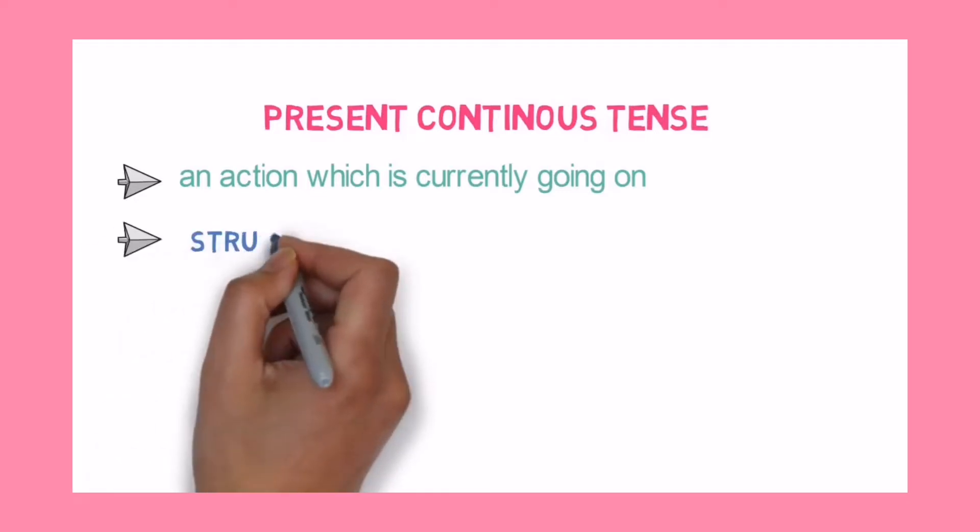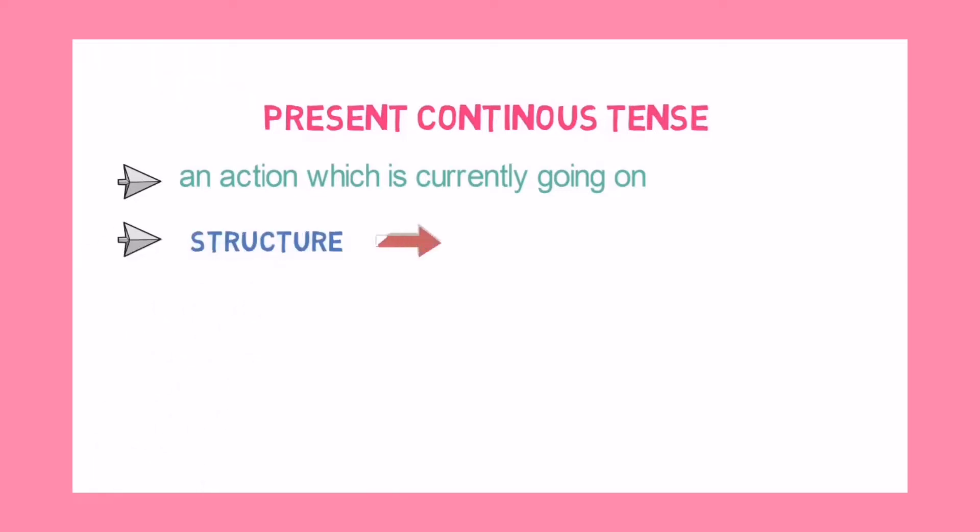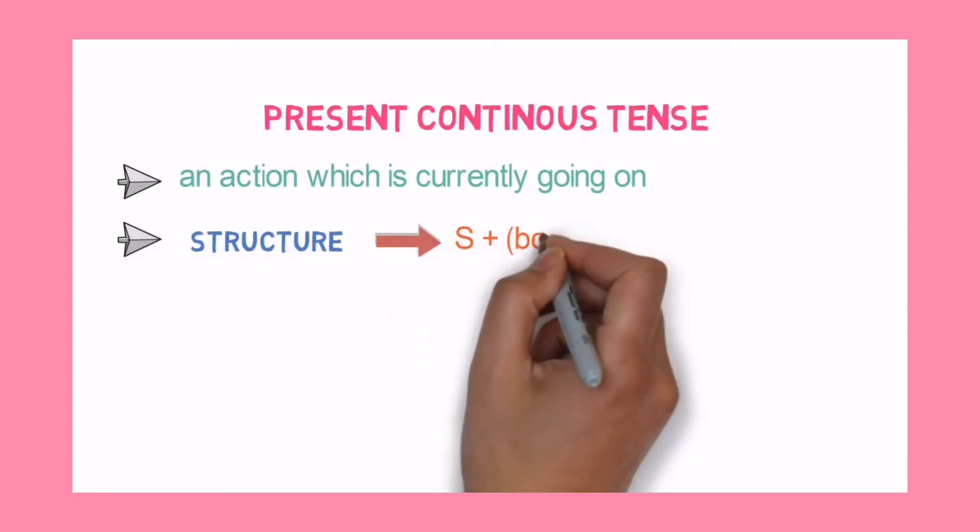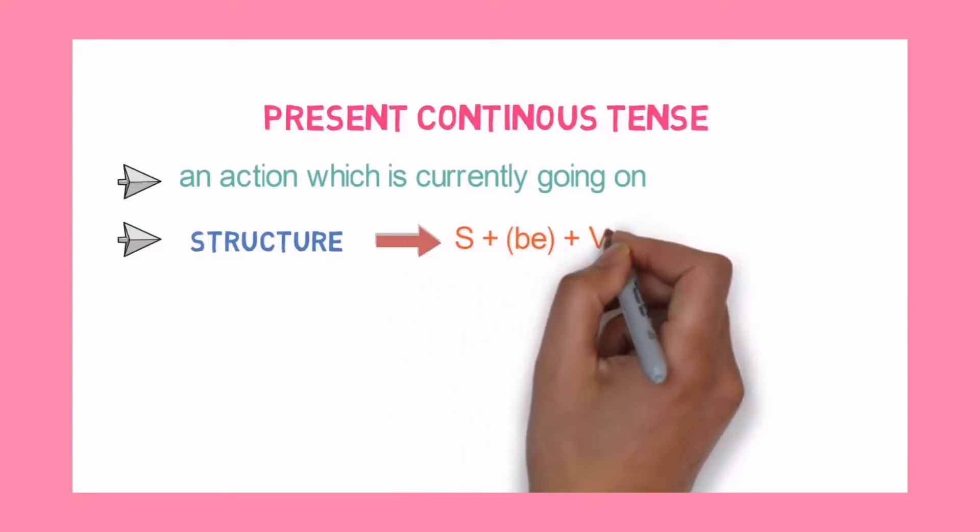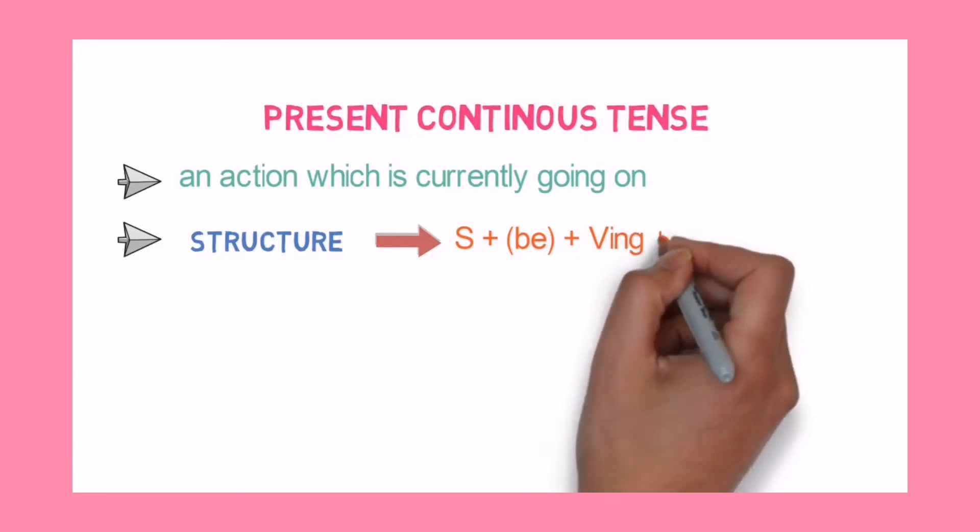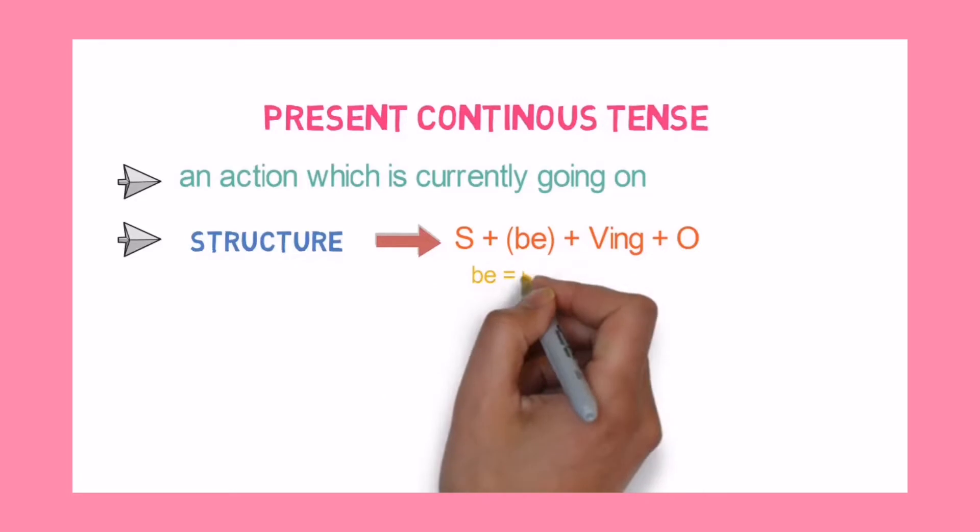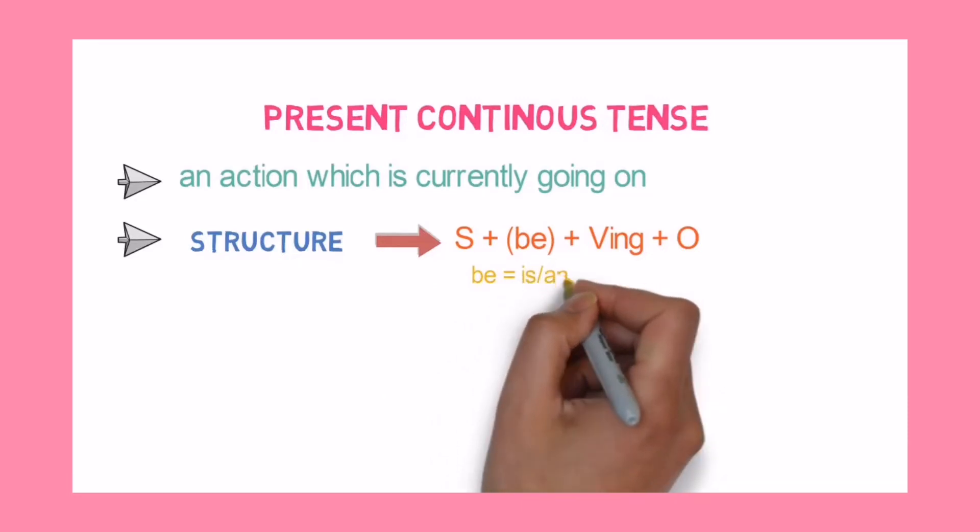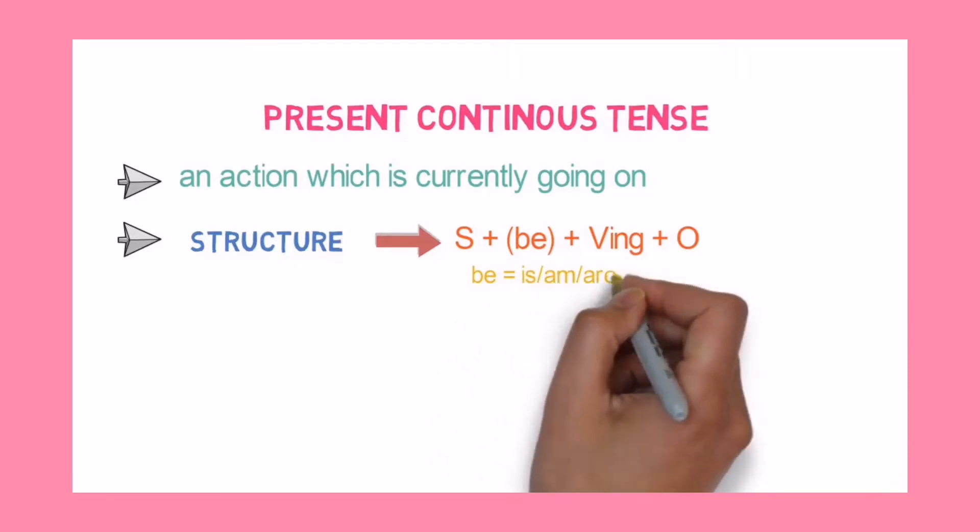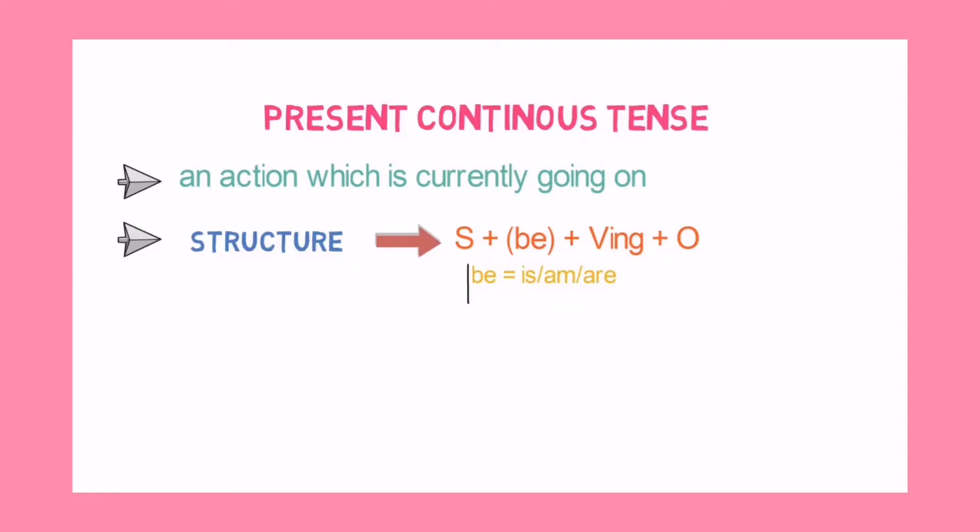And the structure of present continuous tense is subject plus be verb plus verb-ing plus object. Here verb be is is, am, or are, and we use these verb forms depending upon the first person, second person and the third person. For example,